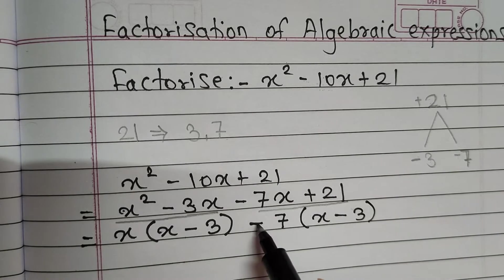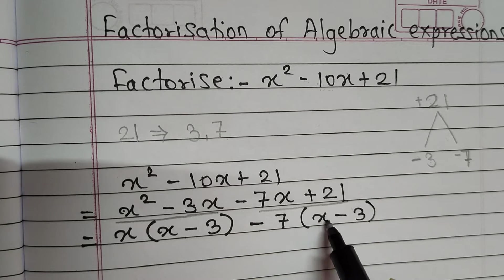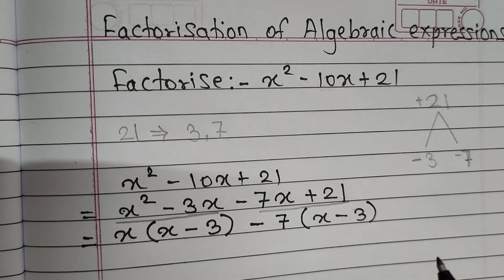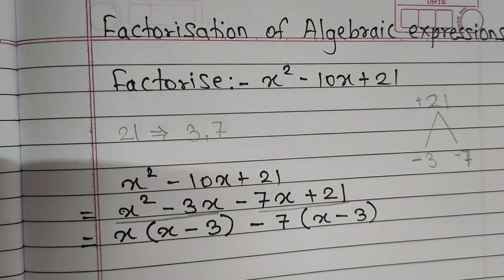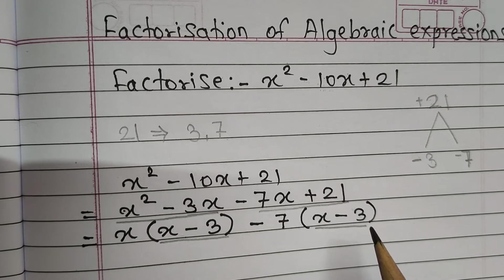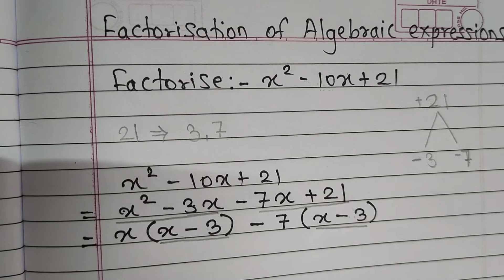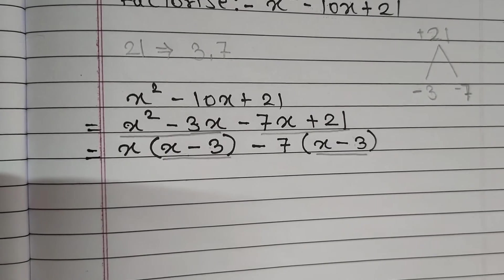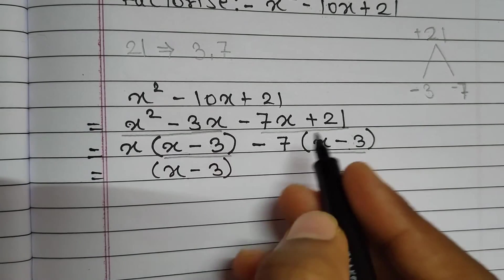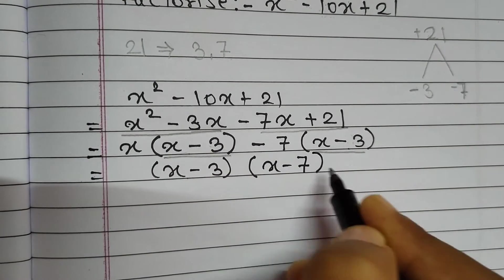Why? Because minus 7 into x gives minus 7x, and minus 7 into minus 3 — minus into minus gives plus — is plus 21. One important thing to keep in mind is that the first bracket and the second bracket must always be the same; if they match, your solution is correct. Here both brackets are x minus 3, so we take x minus 3 as common, and the second bracket becomes x minus 7.